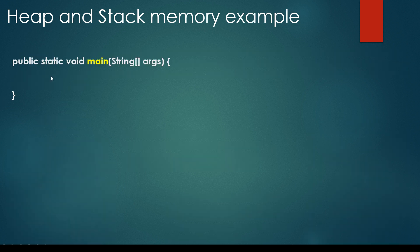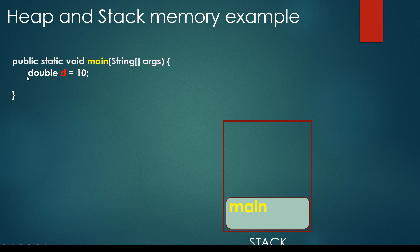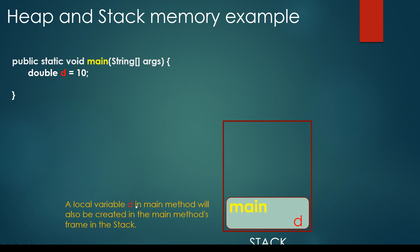Let's take a look at a concrete example. Every single application starts with the main method. Because it is a method call it is going to be inserted into the stack memory automatically. In the stack, a frame will be created for the main method, and if we create a local variable — for example a double with value 10 — that local variable d in the main method will also be created in the main method's frame on the stack memory.